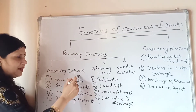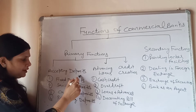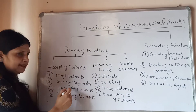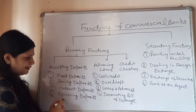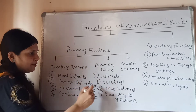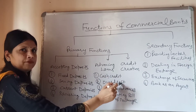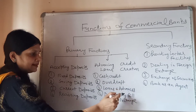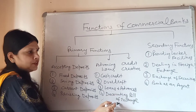Under accepting deposits, the types included are: fixed deposits, saving deposits, current deposits, and recurring deposits. Under advancing loans, the forms include: cash credit, overdraft, loans and advances, and discounting bill of exchange.